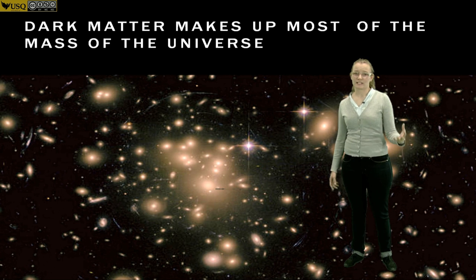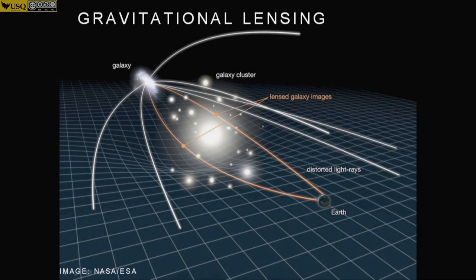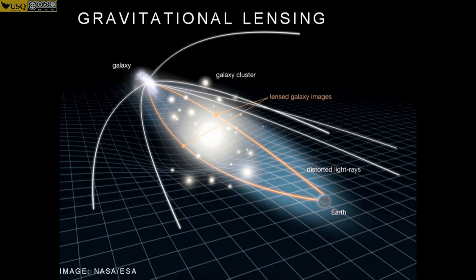So what do I mean by this gravitational lensing, this bending? Einstein came up with the idea that mass bends space and time. So you see here the mass of this galaxy cluster in the middle is bending the space and time around it and bending the light from the far distant galaxy as it comes towards Earth.